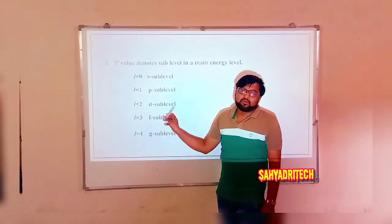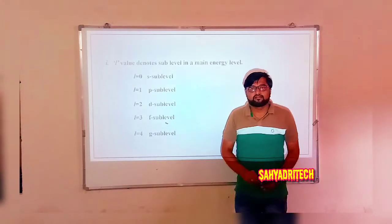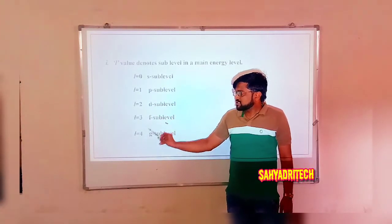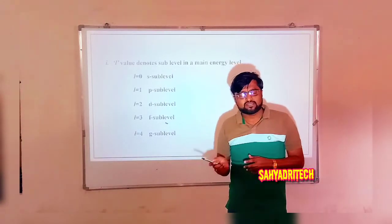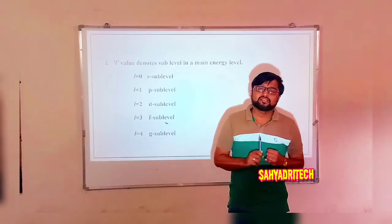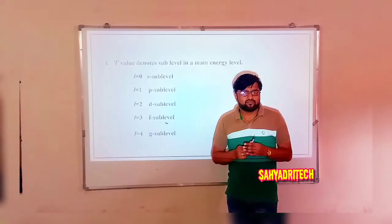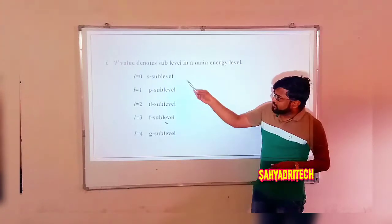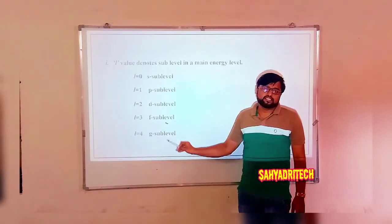These l values are symbolically represented as s, p, d, f, g, h, i, j and so on. For azimuthal quantum numbers, the possible l values are 0, 1, 2, 3, 4, 5, 6 and so on, and symbolically they are s, p, d, f, g, h, i, j and so on.